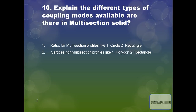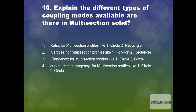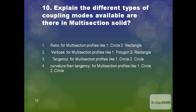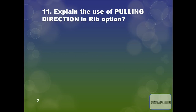For two rectangles having more vertices, you can provide the Vertices coupling option. The next coupling mode is Tangency, which is formally applicable for profiles like two circles. These are the coupling modes available in multi-section solid.